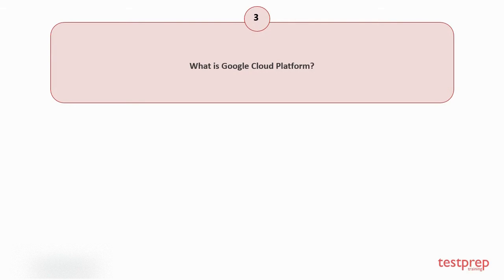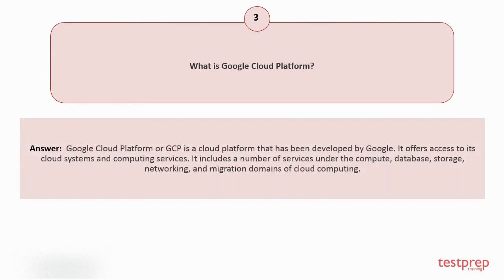Question number three: What is Google Cloud Platform? Google Cloud Platform, or GCP, is a cloud platform developed by Google. It offers access to its cloud systems and computing services, including services under the compute, database, storage, networking, and migration domains of cloud computing.